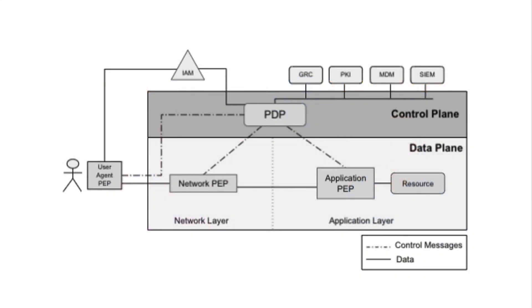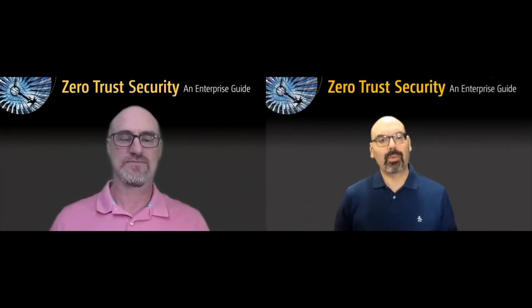Let's talk about policy enforcement points, because in many ways they're the crux of what has to happen. This diagram from the book introduces three types or classes of policy enforcement points: the user agent PEP, which in many circumstances runs on a user's device — though most zero trust vendors also have an agentless deployment model; network PEPs that sit and do enforcement at the network layer; and application PEPs which do enforcement at the application layer. There's often a fuzzy line between these, which we'll cover when discussing deployment models and the policy model.